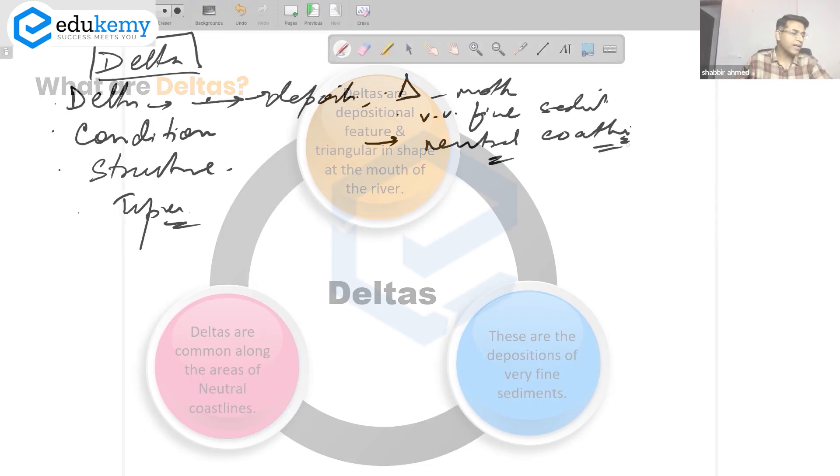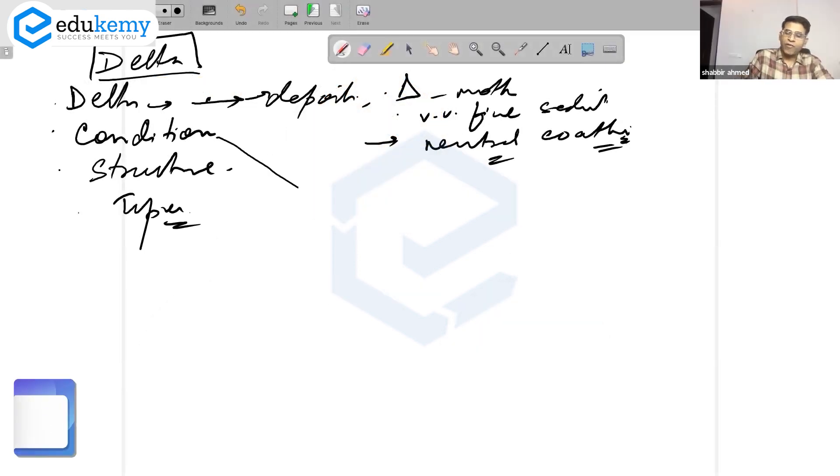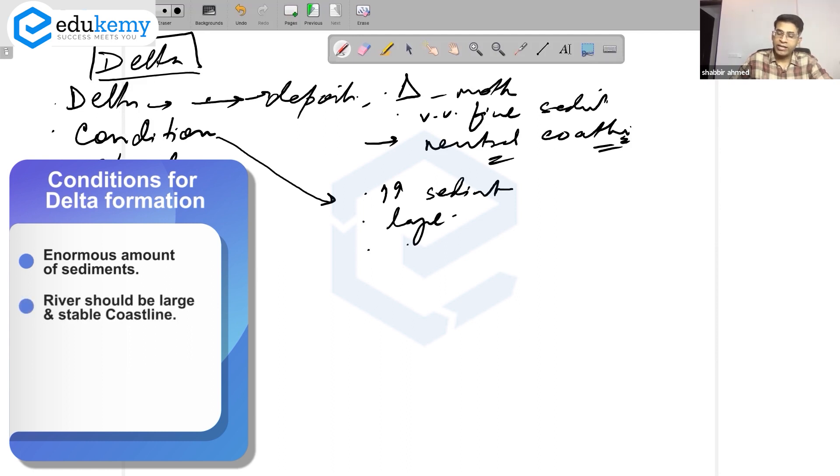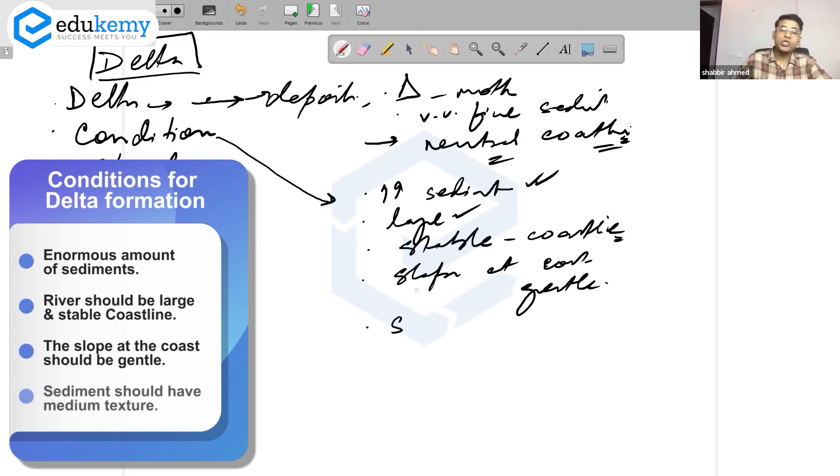In two or three lines, what are deltas? Now conditions for delta formation: there must be enormous amount of sediments, the river should be large, the coastline should be stable, and very importantly the slope at the coast should be gentle.